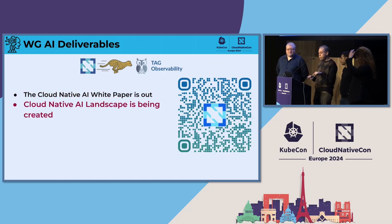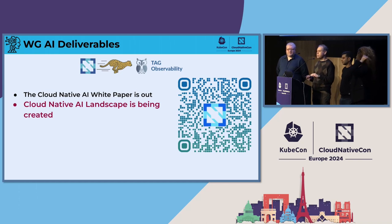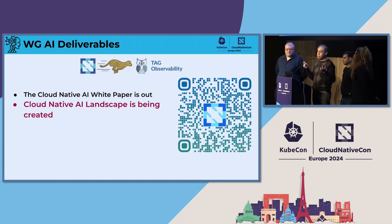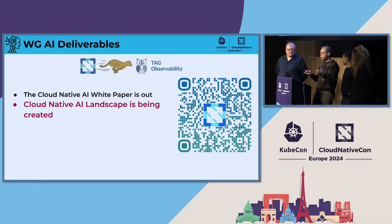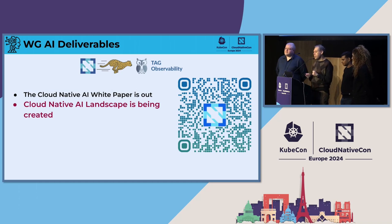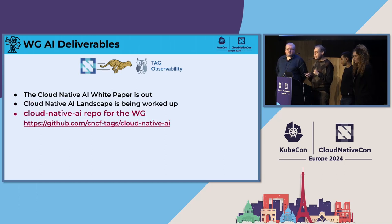Another thing we're working on is the Cloud Native AI landscape. As you may be aware, there's a big landscape in the Cloud Native ecosystem and it can be hard to read. What we're trying to do is constrain that landscape into AI type of workloads and the Cloud Native ecosystem to make it easier for people to find the different projects and get started.